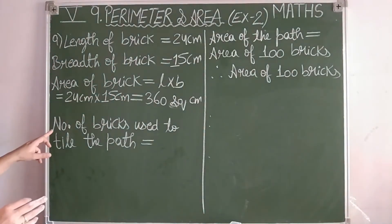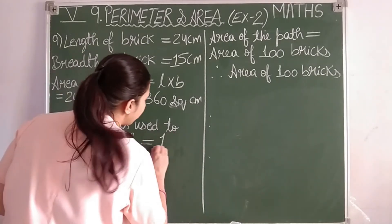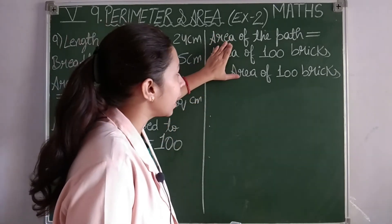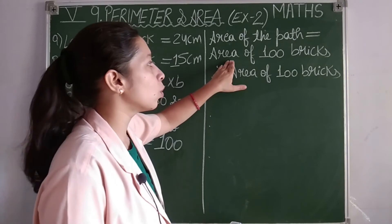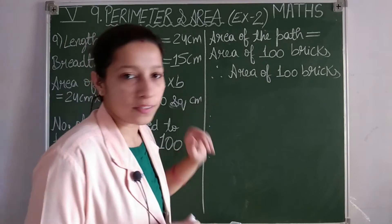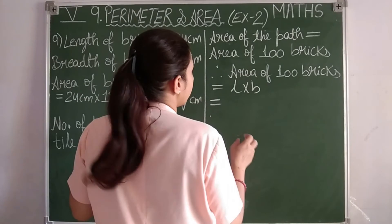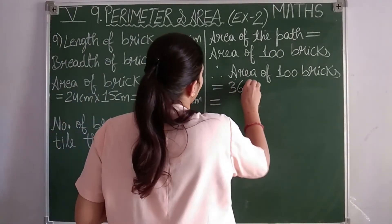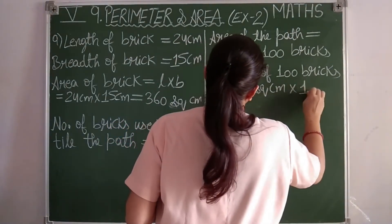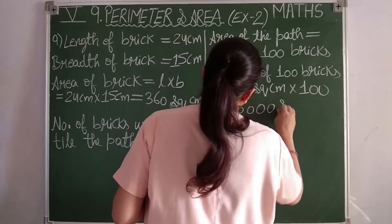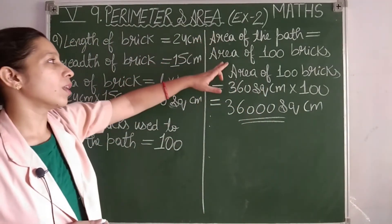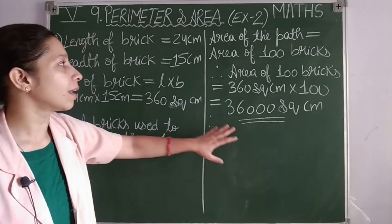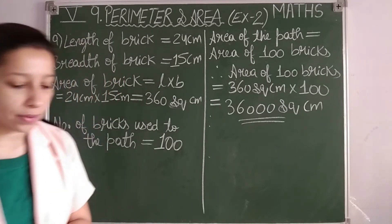Multiplying 24 into 15: 5 fours are 20, 5 twos are 10 plus 2 is 12; 1 four is 4, 1 two is 2 — giving 360 square centimeters as the area of one brick. Number of bricks used is 100. So total area of the path equals 360 square centimeters times 100 equals 36,000 square centimeters.